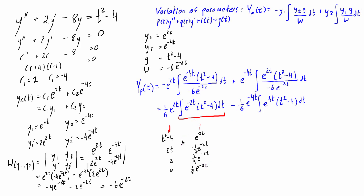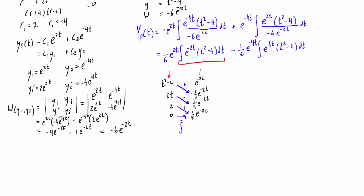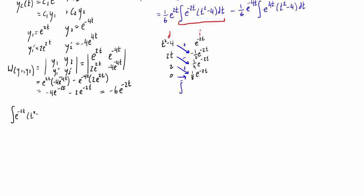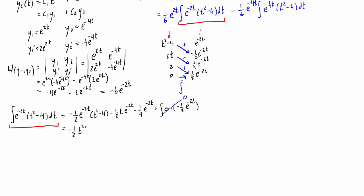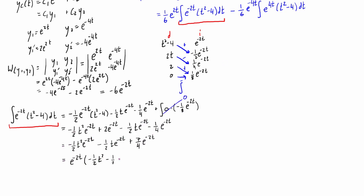Using the tabular integration by parts method, we multiply diagonally: the first pair without adjusting the sign, the second pair switching to negative, and the third pair without adjusting the sign. The last row contains a zero, so that term disappears. Expanding out, the integral of e^(-2t)·(t² - 4) equals e^(-2t) times all those resulting terms.